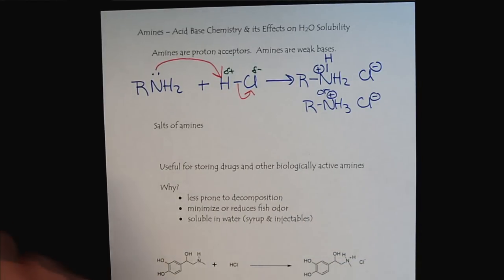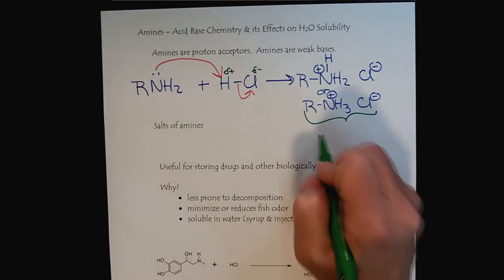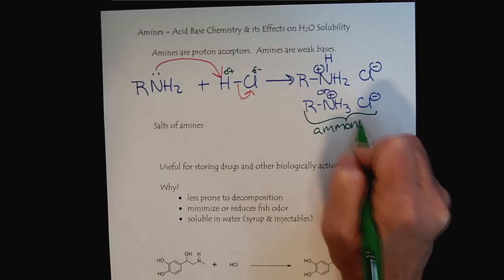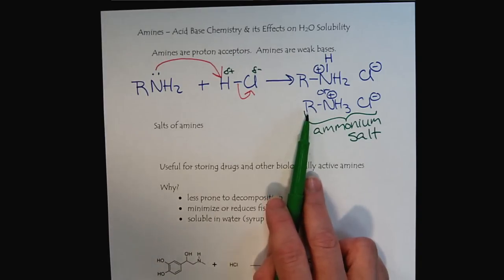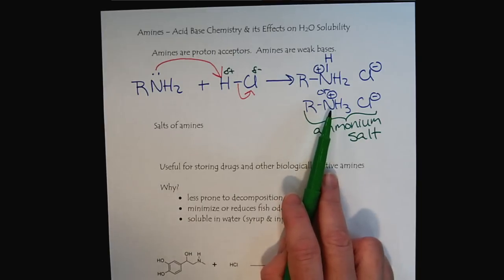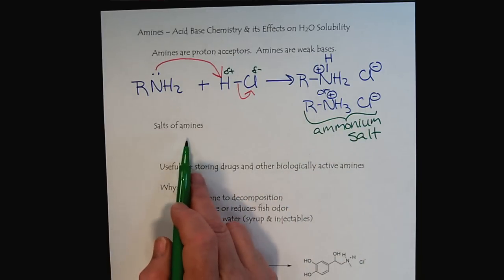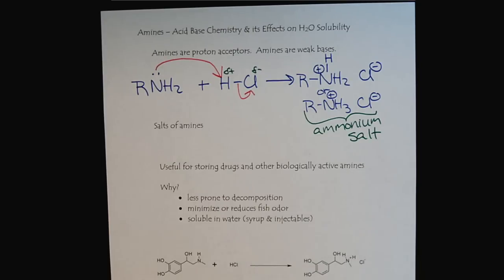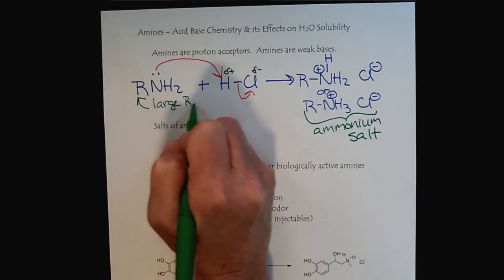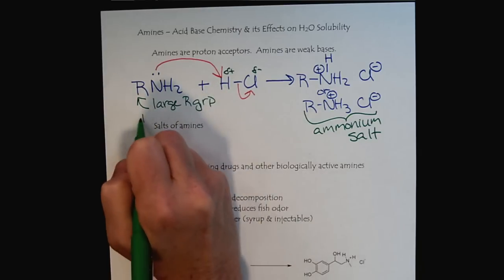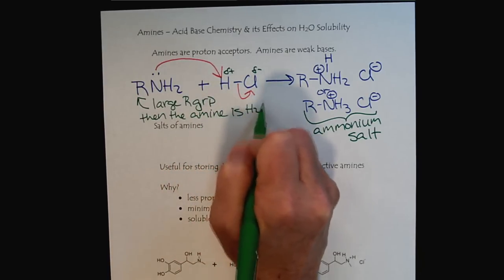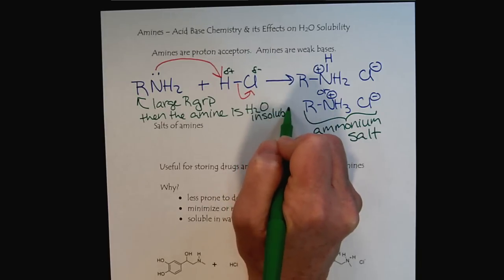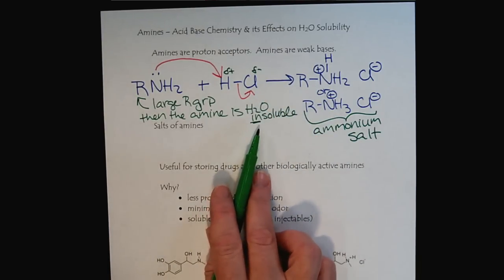This is very important here. We describe this as an ammonium salt. It's a more complicated ionic compound because we can have a large complex R group, but it's still fundamentally a cation and an anion. These salts of amines are very important because the R groups can be very large. If we have a large R group, then the amine will be water-insoluble.